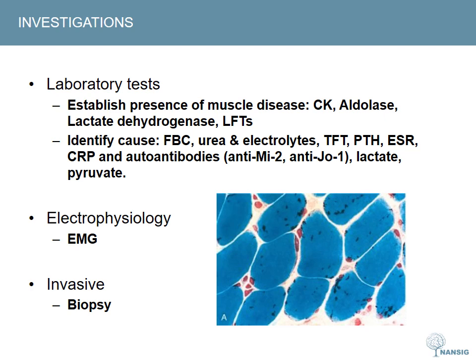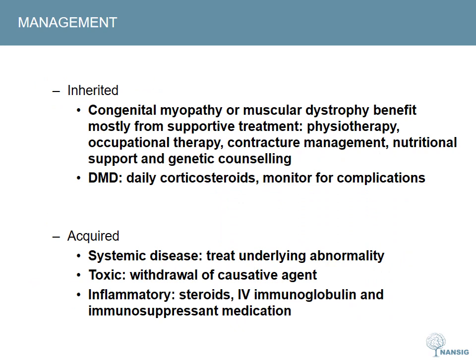The figure shows a nemaline myopathy. Management is largely supportive for an inherited myopathy. Conditions such as congenital myopathy or muscular dystrophy benefit most from physiotherapy and occupational therapy, as well as contracture management, nutritional support and genetic counselling. Duchenne muscular dystrophy may benefit from daily corticosteroid treatment. It's also important to monitor for complications relating to kyphoscoliosis and respiratory, cardiac or bulbar muscle involvement.